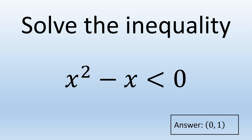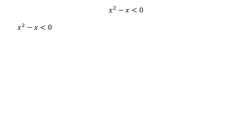The solution set of this inequality includes all the real numbers greater than 0 and less than 1. Let's first factor the quadratic expression on the left side of this inequality. We can do that by factoring out x from both terms, so x squared minus x is factored into x and x minus 1.